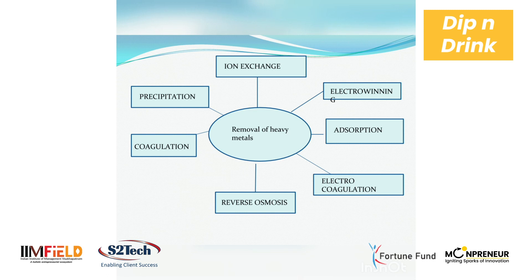Water purification can be done by many procedures and a few of them are ion exchange, coagulation, precipitation, adsorption, electrowinning, electrocoagulation, and reverse osmosis. The main objective of water purification is that heavy metals should be removed from water, and a few of those heavy metals are calcium, magnesium, and others.